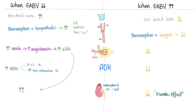In summary: when effective arterial blood volume is low, everything is going to be high. You drink more water. Baroreceptors fire sympathetic signals to increase heart rate, increase contractility, increase the tone of blood vessels. Renin-angiotensin-aldosterone system is high. ADH is high, as well as reabsorption of salt and water by the kidney. On the other hand, when effective arterial blood volume is high, everything is going to be low.